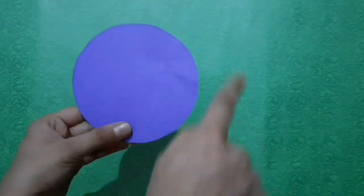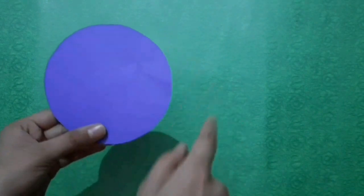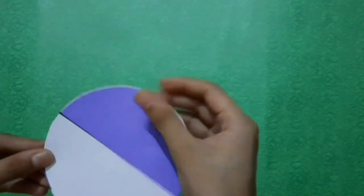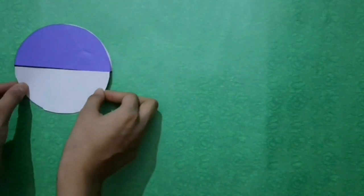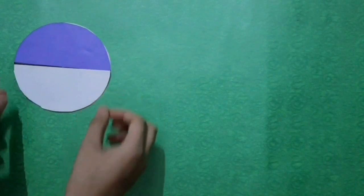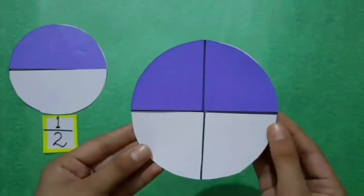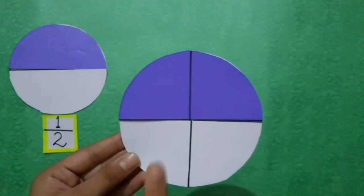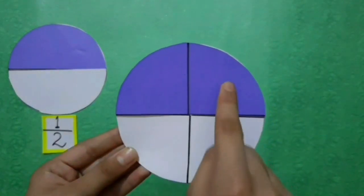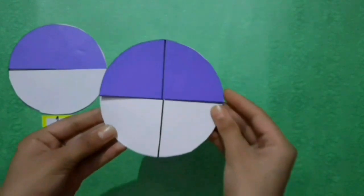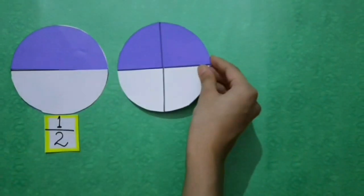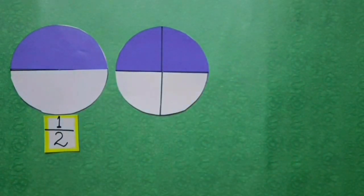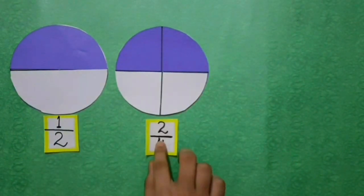Students, here I have a circle which is divided into two equal parts. Tell me, what is the fraction of the colored part? 1 upon 2. Now I have divided the circle into four equal parts. Then what is the fraction of the colored part? That is 2 upon 4.